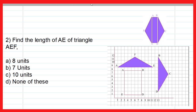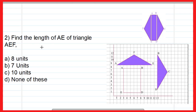Moving to the second question: find the length of AE of triangle AEF. You have to find the length of side AE. To find this length you could use the distance formula, but here it is not necessary. You can find the coordinates of E and A and apply the distance formula, but there is an easier method since the triangle is placed on the coordinate axis.